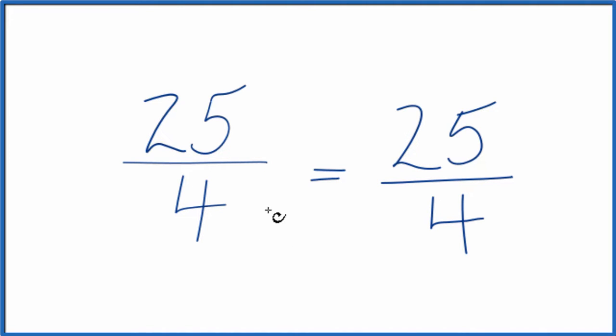25 over 4 is an improper fraction because the numerator is bigger than the denominator. So we could write it as a mixed fraction. Let's do that.